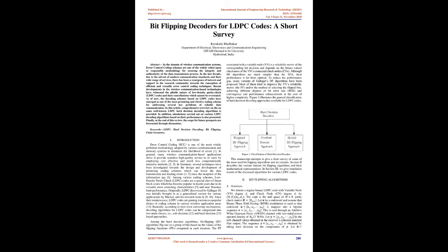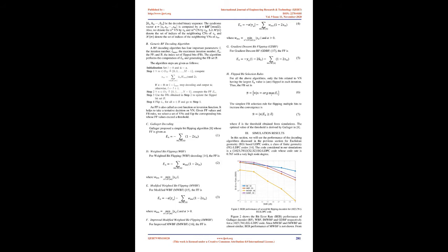Basically, according to their error-correcting mechanisms, decoding algorithms for LDPC codes can be categorized into two main classes: soft decision and hard decision-based approaches. Among the hard decision algorithms, bit-flipping, BF, algorithms flip one or a group of bits based on the values of the flipping functions, FFs, computed in each iteration. The FF associated with a variable node, VN, is a reliability metric of the corresponding bit decision and depends on the binary value checksums of the VN's connected check nodes, CNs. Although BF algorithms are much simpler than the SPA, their performance is far from optimal. To reduce the performance gap, many variants of Gallagher's BF algorithms have been proposed.